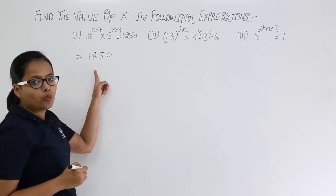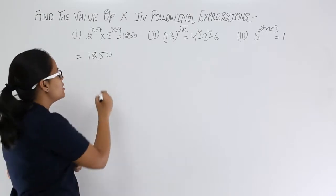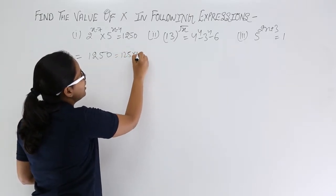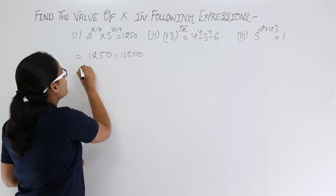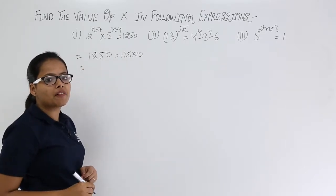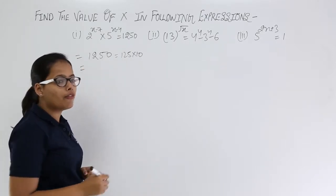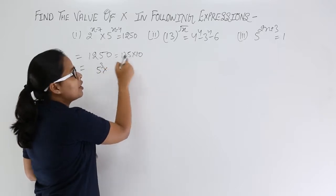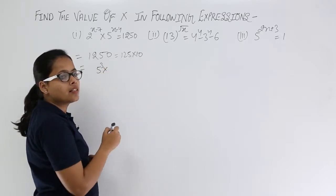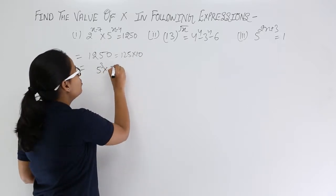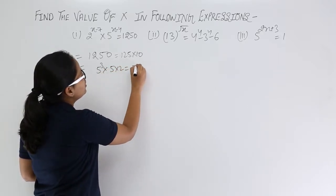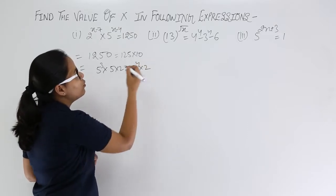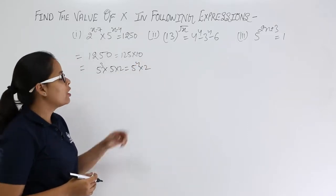You can write 1250 as 125 × 10, and 125 is the cube of 5, and 10 can be written as 5 × 2. So this is exactly 5 raised to power 4 times 2.